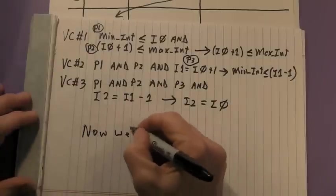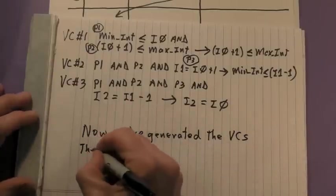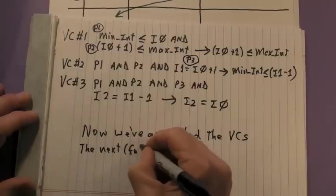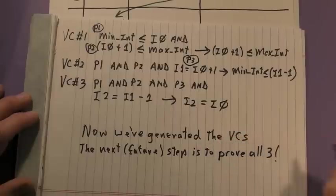And there you have it. We've now generated all the VCs for the do nothing operation. The next step is to prove each of the VCs, and thus the correctness for do nothing. Thanks for watching. See you next time.